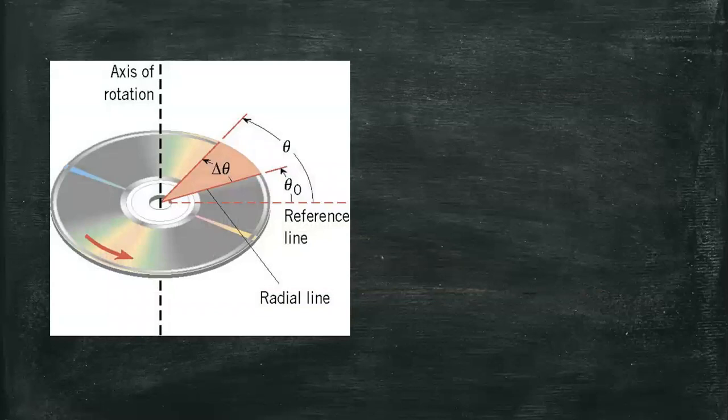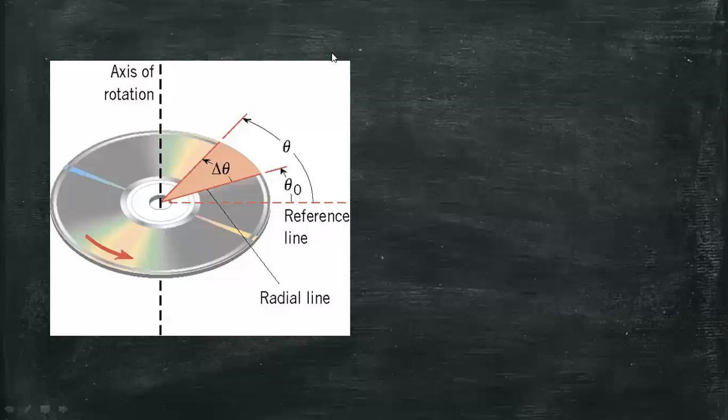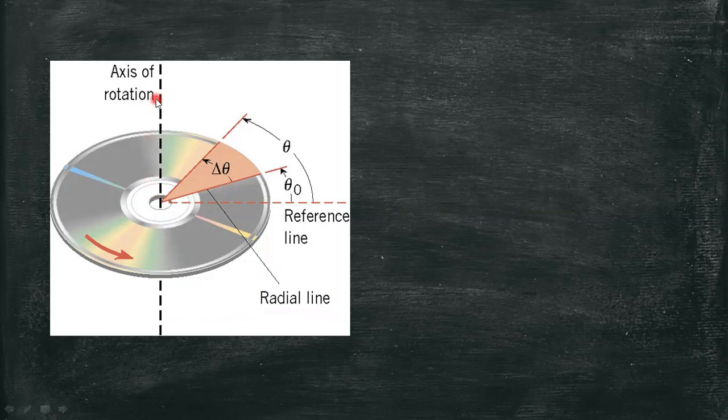In the simplest kind of rotation, points on a rigid object move in circular paths around an axis of rotation. The angle through which a rigid object rotates about a fixed axis is called angular displacement.